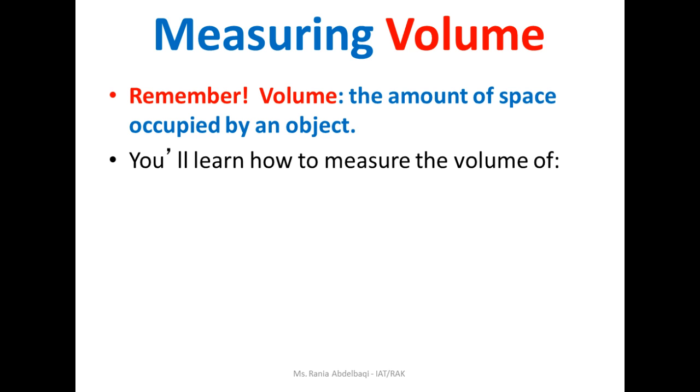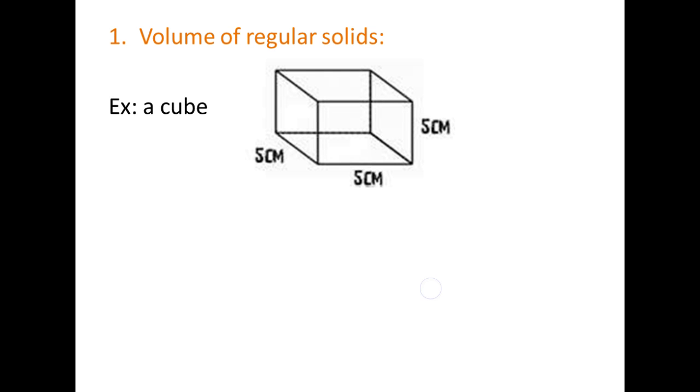You've probably learned this before, but let's just review. If it's a regular solid like a cube or a rectangular solid, all you're going to do is take length times width times height. In this example, all of the sides are the same, so you're going to do 5 times 5 times 5.